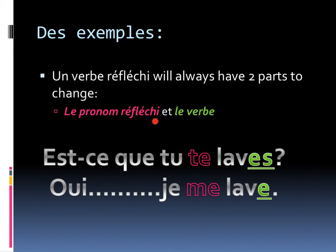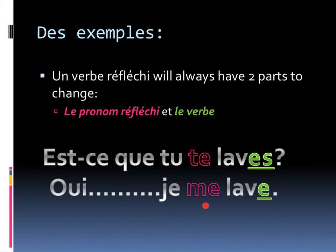It'll have the pronom réfléchi — that reflexive part that began as a se — and also le verbe. Le verbe is going to be pretty simple, because they are endings that you're familiar with and have seen before. Regardez un exemple. Est-ce que tu te laves? Tu te laves? You'll notice that there's a change here for tu, to reflect te, and also an ending that matches tu, a s. Oui, je me lave. Here, the reflexive pronoun is shifted to me, to reflect that I'm doing this action to myself, and my ending matches je.